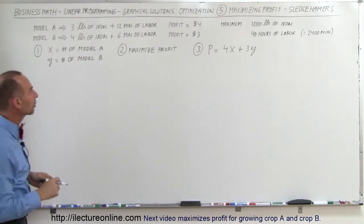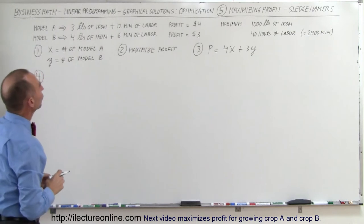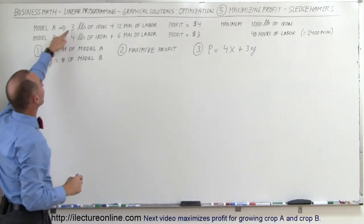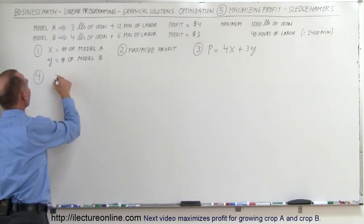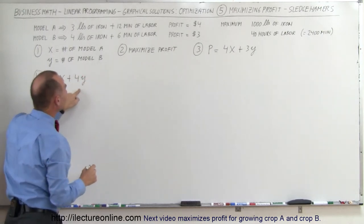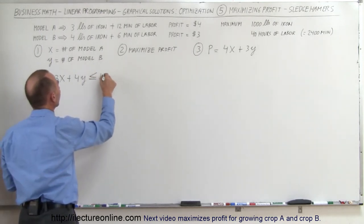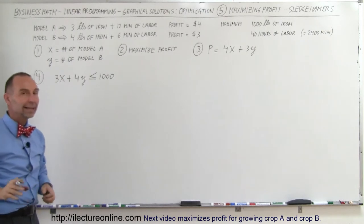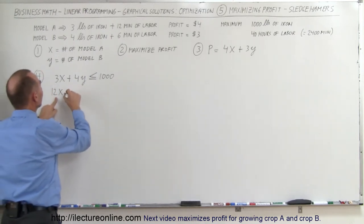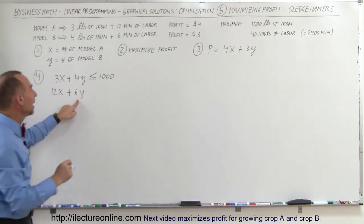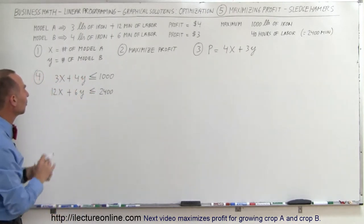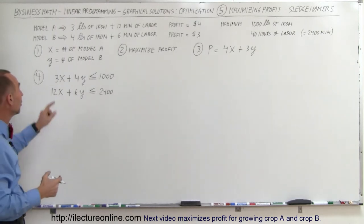The fourth step: we need to find our constraints. What are we constrained by? First, we're constrained by the amount of iron we have. We need 3 pounds for A and 4 pounds for B, so 3X plus 4Y has to be less than or equal to 1,000. Then we're limited by labor: 12X plus 6Y has to be less than or equal to 2,400 minutes. Of course, X and Y also have to be greater than or equal to 0.